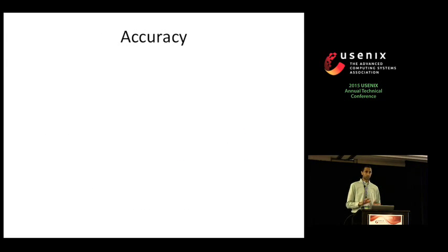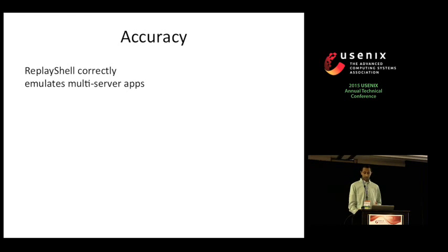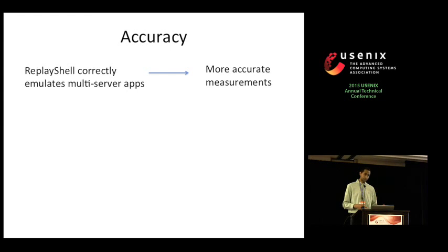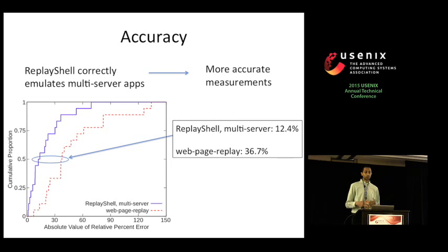For accuracy, replay shell correctly emulates the multi-server nature of a recorded application, leading to more accurate measurements. To evaluate this, we loaded 20 of the Alexa top 100 web pages over the internet over a 5 Mbps link with a 100 ms minimum RTT, then replayed recorded versions locally under the same emulated conditions using both replay shell and Google's Webpage Replay. The CDF of relative percent error shows that page load times within replay shell are much closer to internet measurements at the median.